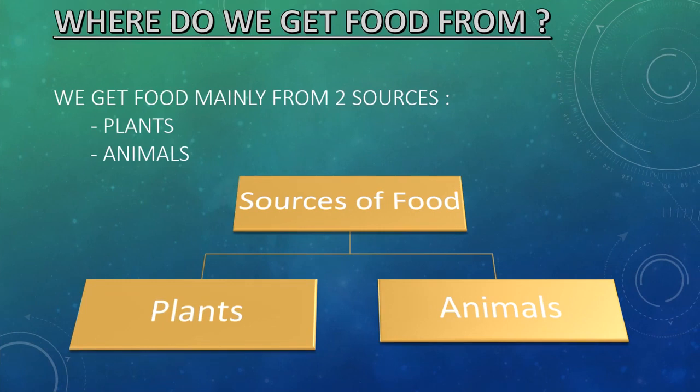Now let us learn about some sources of food. We get food mainly from two sources - either from plants or animals.